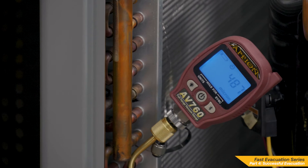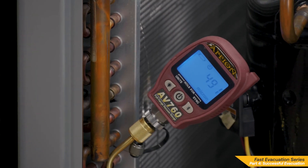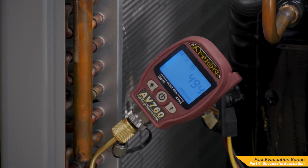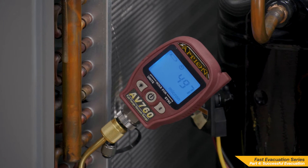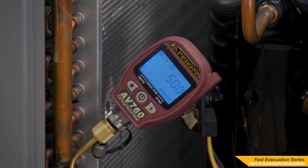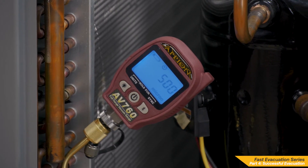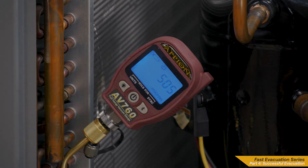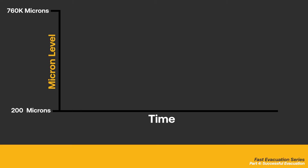However, if the micron level climbs higher than the acceptable rise during the duration of the test, the evacuation is not finished. The micron gauge can still provide answers about the current state of the system. As more time passes with the system still isolated, the micron gauge can indicate several issues: an incomplete degassing or dehydration, contaminants inside the system, or a system leak.